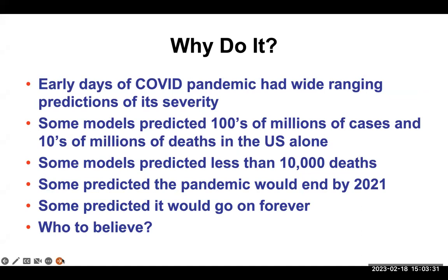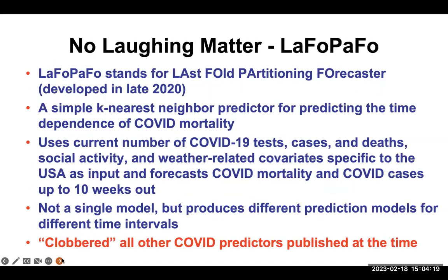Why do you want to do forecasting or prediction? In the case of COVID back in 2020, we really didn't know what was going to happen. We had wide-ranging predictions of how severe it was. Some models — in fact the first models that came out of the UK — predicted hundreds of millions of cases and tens of millions of deaths in the US alone, generating a fair bit of panic. While other models predicted less than 10,000 people would die. Some predicted the pandemic would end by summer 2020, others predicted it would go on forever. With all those different predictions, who do you believe and what do you use to plan for that kind of pandemic?